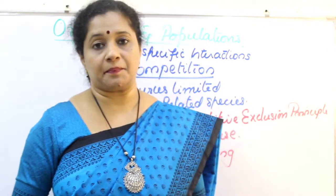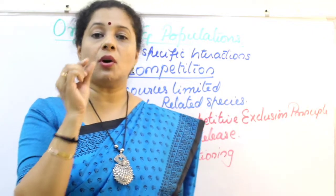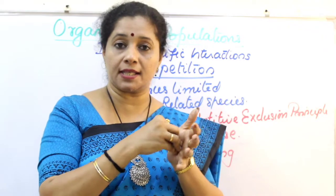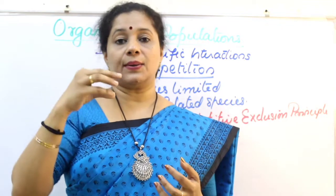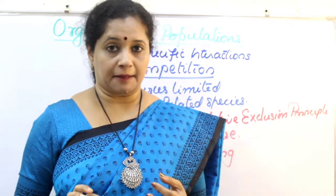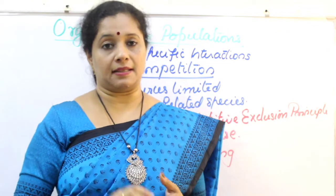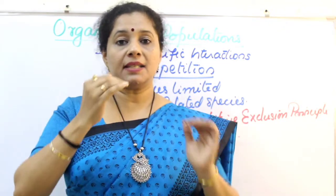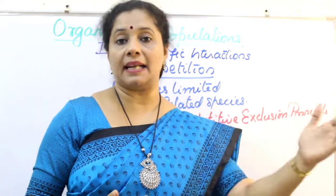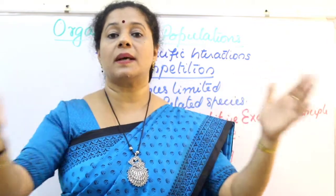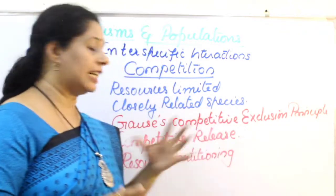Connell did field experiments regarding this on the rocky sea coast of Scotland, where there are barnacles — small shelled organisms that attach to rocky surfaces. There are two types: the larger one called Balanus and the smaller one called Chthamalus. In the presence of Balanus, Chthamalus was confined to a smaller geographical area. When Balanus was experimentally removed, Chthamalus became widely distributed. This demonstrates competitive release.